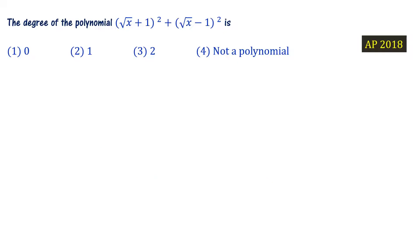Next problem: Find the degree of the polynomial (√x + 1)² + (√x − 1)². This is an AP Policy Set 2018 question. At first glance, we have x^(1/2) — i.e., square root of x terms.